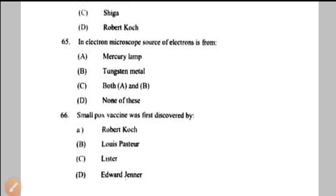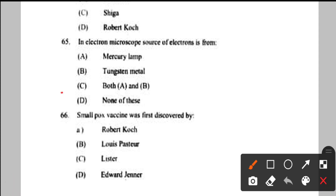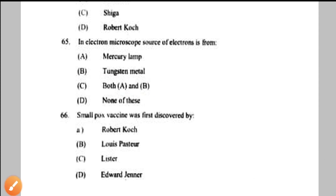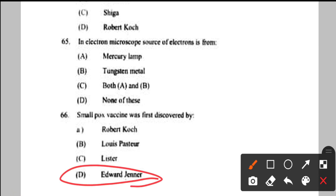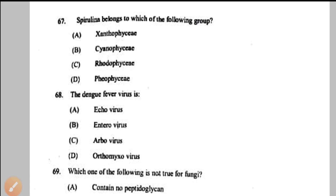Question number 65: in an electron microscope the source of electrons is from — common sources include tungsten filament, solid state crystal, field emission gun, and mercury lamp. Both tungsten metal and others can be correct — go with both A and B — option C. Question number 66: smallpox vaccine was first discovered by — Edward Jenner — option D.